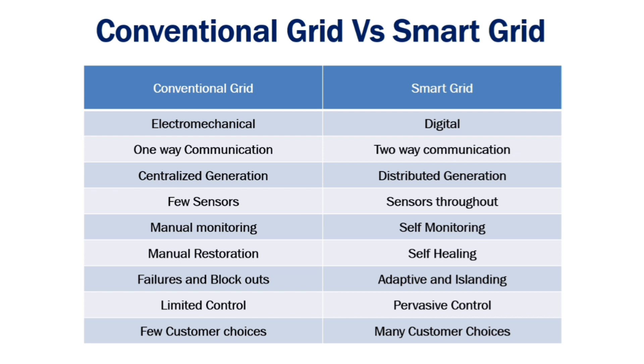In conventional grid, there are few customer choices, but in smart grid, many customer choices are available.